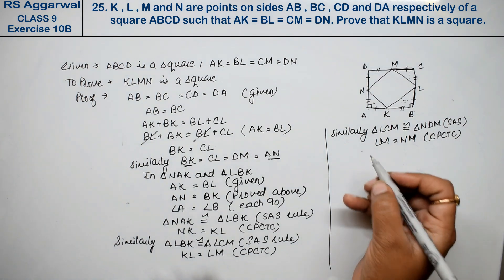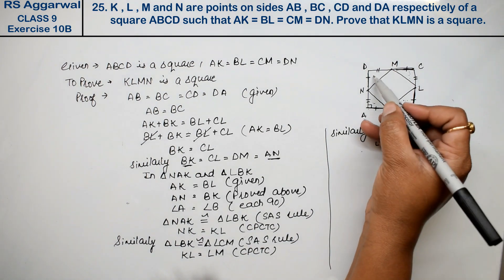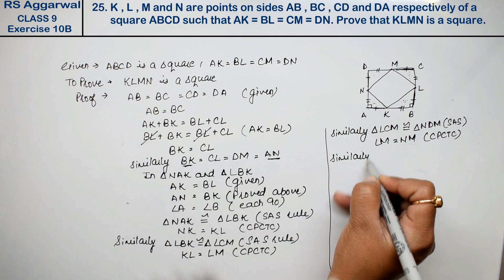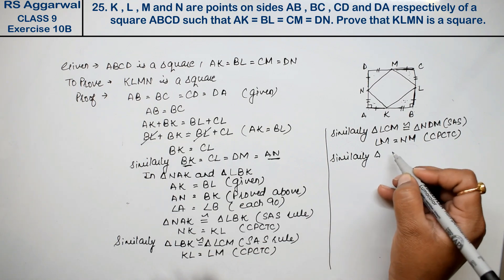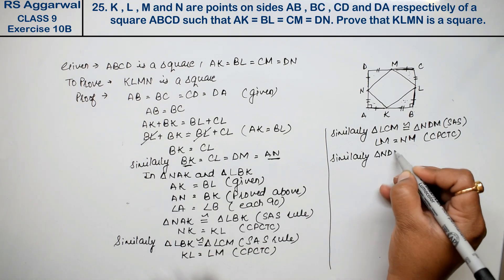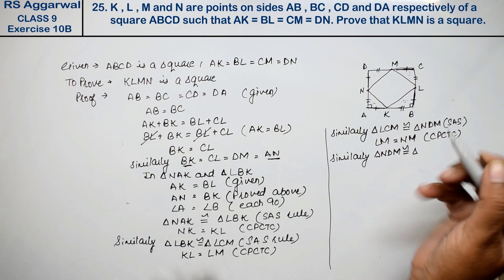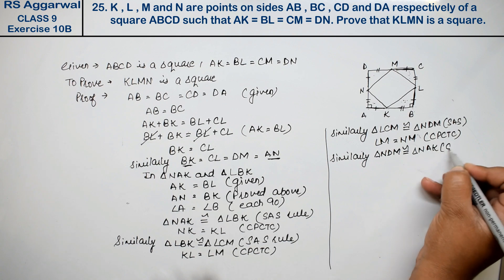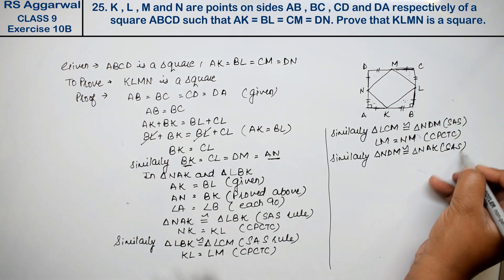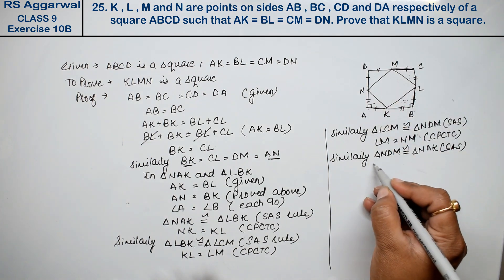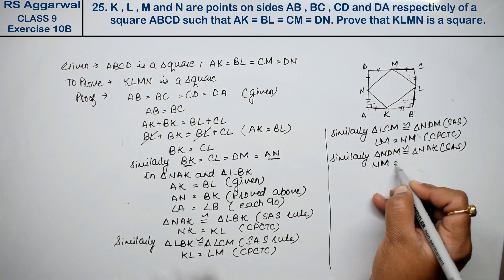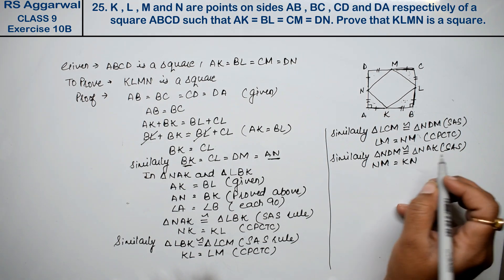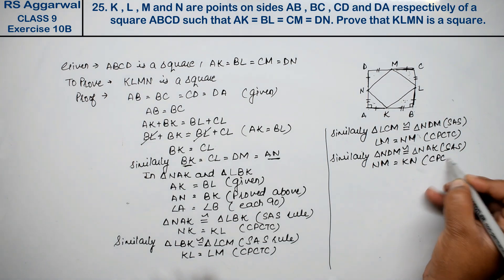Similarly, triangle NBM is congruent to triangle NAK by SAS rule. And therefore NM equals NK by CPCTC.